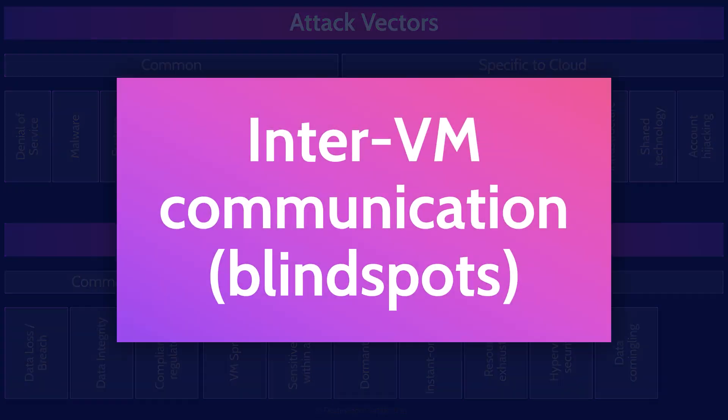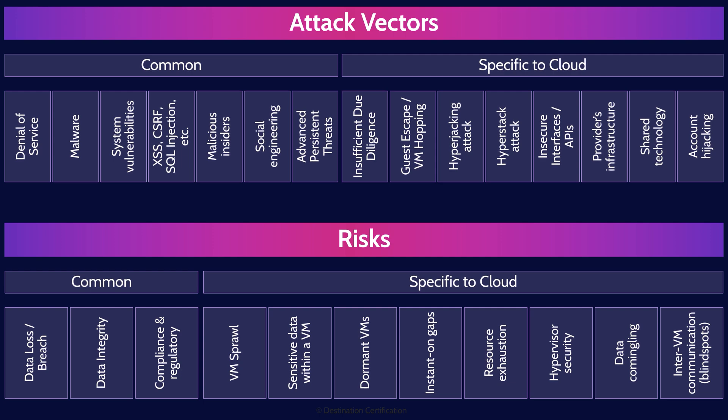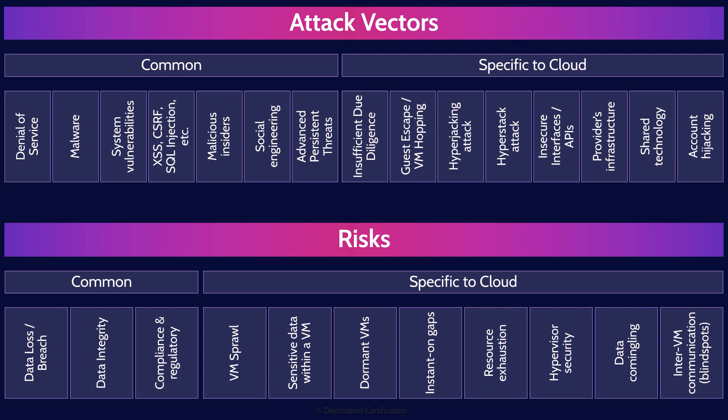The final risk is inter-VM communication and blind spots. One example of a blind spot is when two VMs on the same hypervisor communicate with each other directly through the hypervisor rather than routing traffic out to your IDS on the software-defined network. This means your IDS will be blind to that traffic. You will inevitably have these sorts of blind spots in the cloud, and you need to identify them and figure out how to mitigate the risk. That's an overview of attack vectors and risks within Domain 3, covering the most critical concepts you need to know for the CCSP exam.